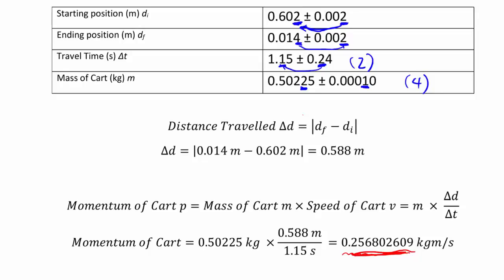as we go through our calculation, we simply apply our sig fig rules. We know that these two are underlined. Again, this is a subtraction, so we're caring about decimal places instead of the number of sig figs. We don't care that the 0.014 here has two sig figs, but we care that it has three decimal places. Three decimal places, three decimal places—so the final answer also has three decimal places. Underline that.